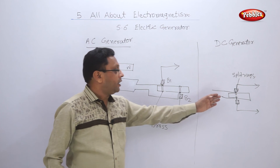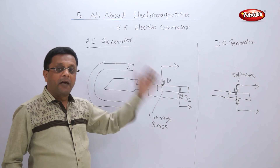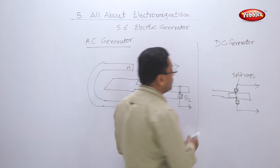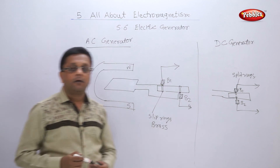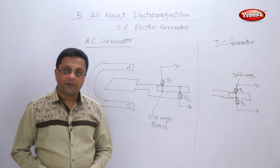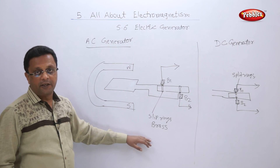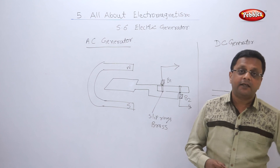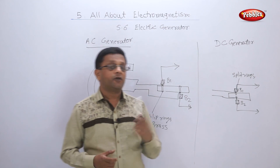In the DC generator, whenever the armature rotates in the magnetic field, the current is induced. The brushes B1 and B2 are always in contact with the armature through the split rings, so DC current generates here and AC current generates in the AC generator. There can be a question: differentiate between AC and DC generators — we will discuss that in the question answers.